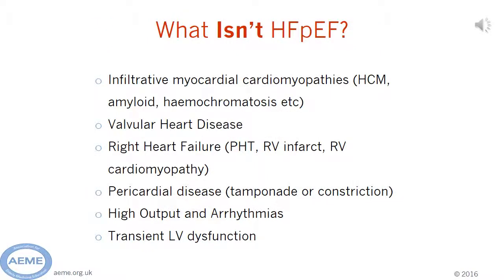Importantly, it isn't heart failure with preserved ejection fraction if you're able to identify a specific cause of heart failure, which may include infiltrative cardiomyopathy such as hypertrophic cardiomyopathy, amyloid, and haemochromatosis; valvular heart disease; right-sided heart failure due to pulmonary hypertension or right ventricular cardiomyopathy; pericardial disease, tamponade or constriction; high output states and arrhythmias; and transient LV dysfunction which has got better by the time the patient's been imaged.